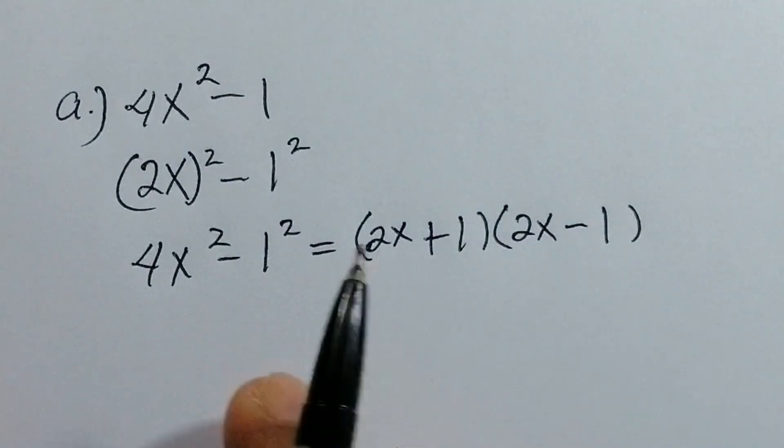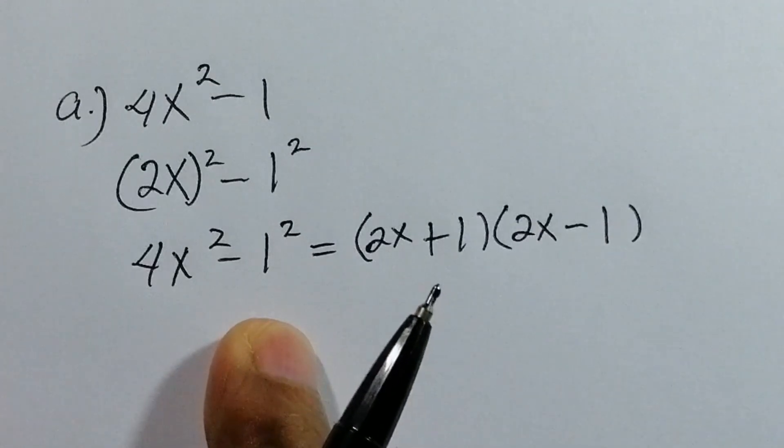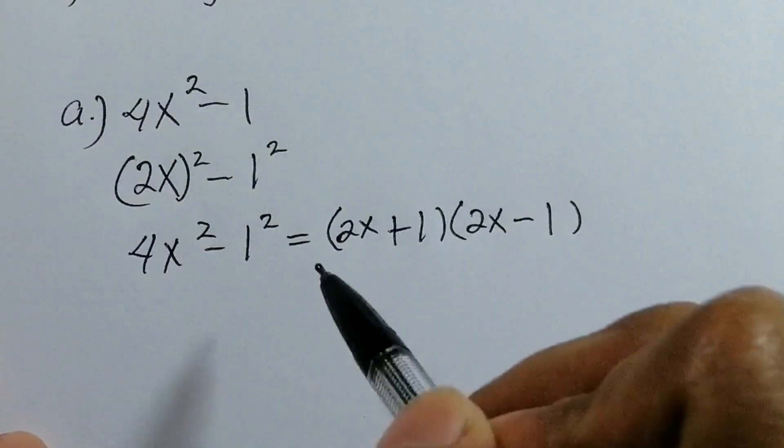That's very easy and simple. This is the factored form of 4x² - 1. This is our final answer.